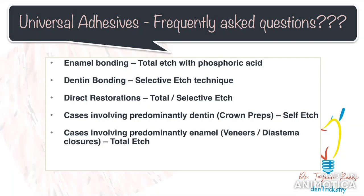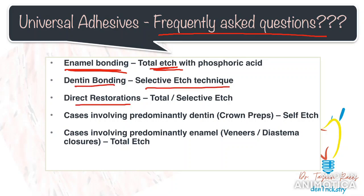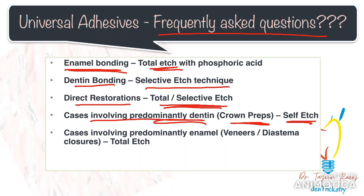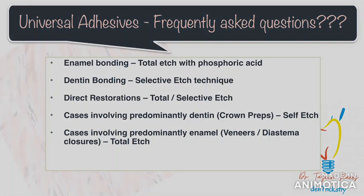Since most people use universal adhesives, let us look at some of the recommended protocols for their use. When using universal adhesive for only enamel bonding, it is preferred to go with an etch and rinse or total etch technique. When only dentine is involved, go ahead with a self-etched or selective etch technique depending on the case. For direct restorations, depending on the amount of enamel or dentine present, you will decide between a total etch, etch and rinse, or selective etch technique. For indirect restorations involving predominantly dentine, for example crown preparations, it is better to go for a self-etched technique. Cases involving predominantly enamel, for example veneers or diastema closures, you can go ahead with a total etch technique, which would also be preferred for bonding to sclerotic dentine.